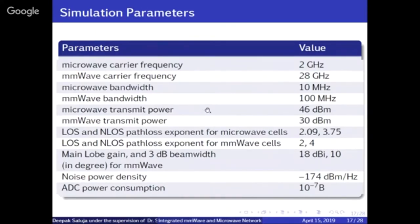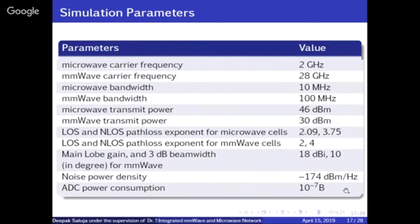Transmit power for millimeter wave is lower at 30 dBm versus 46 dBm for microwave. Path loss exponents are 2 and 3.75 for microwave and 2 and 4 for millimeter wave — 2 for line-of-sight and 4 for non-line-of-sight. Antenna gains are 18 dBi for microwave and 10 dBi for millimeter wave. Noise power density is -174 dBm per hertz, and ADC power consumption parameters are also included.